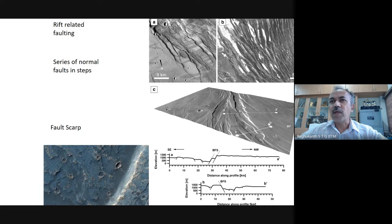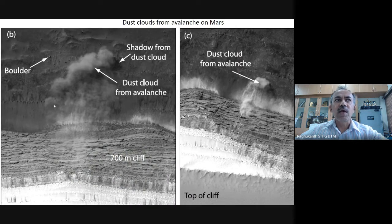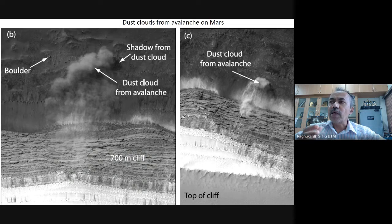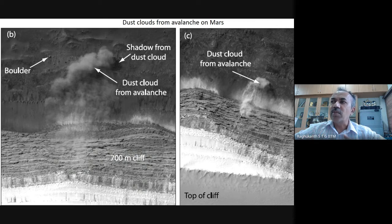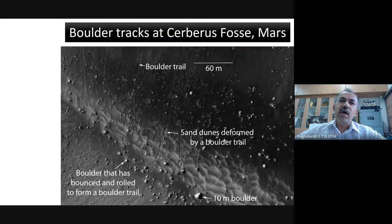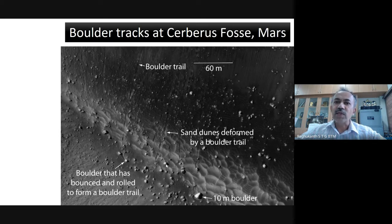All these features — fault scarps, normal faults — you can see from topographic maps and easily identify. You can also see avalanches and boulders — the shadow you can identify too. The Mars Reconnaissance Orbiter rotates around Mars and sends images, maybe every month, so you can see if any change has occurred at a place. There are lots of avalanches and dust clouds available. From the HiRISE data you can get these images. You can see boulder trails — what look like pebbles are actually boulders of almost 10-meter size.